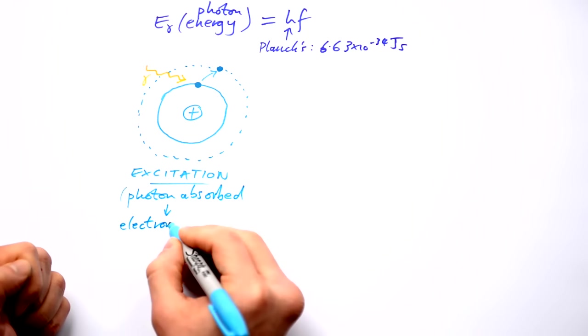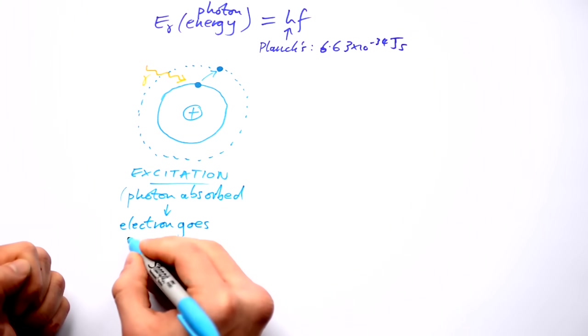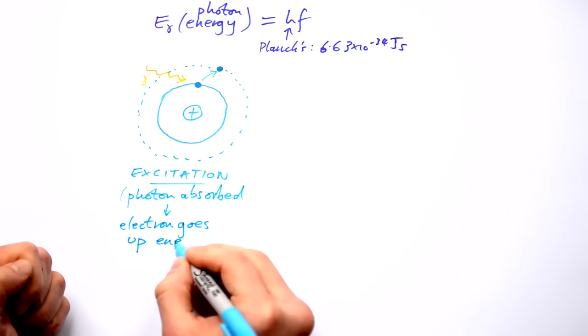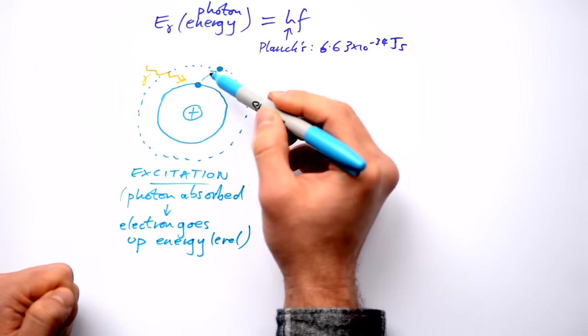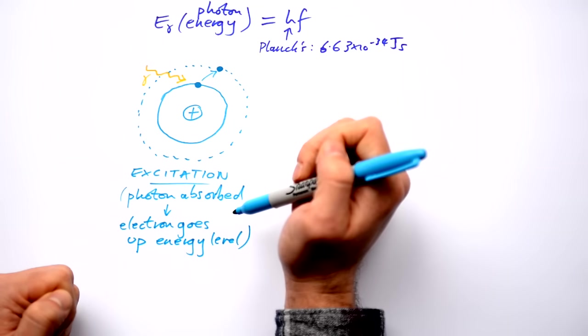Photon is absorbed, electron goes up an energy level. Now what we're going to find out a little bit later on is that electrons can only be in certain energy levels.